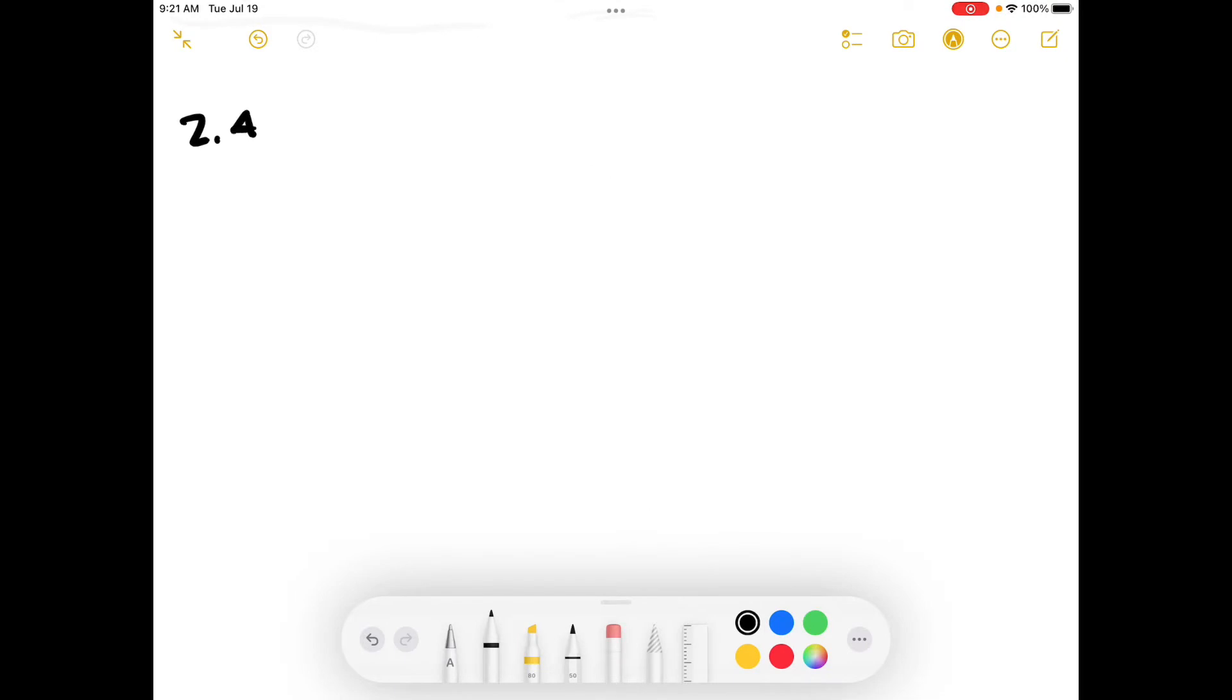Problem 2.4 from Elementary Principles of Chemical Processes asks: using a single dimensional equation, estimate the number of steps it would take you walking at your normal stride to walk from Earth to Alpha Centauri, a distance of 4.3 light years.